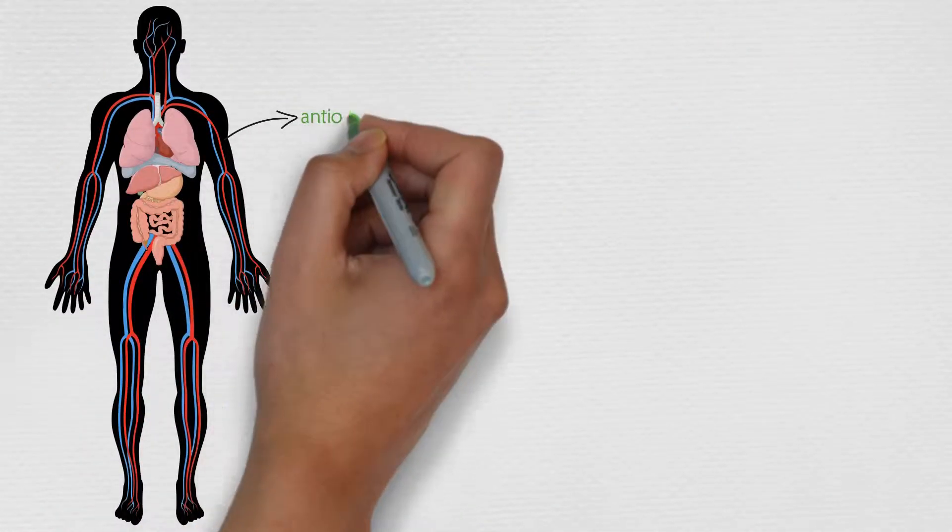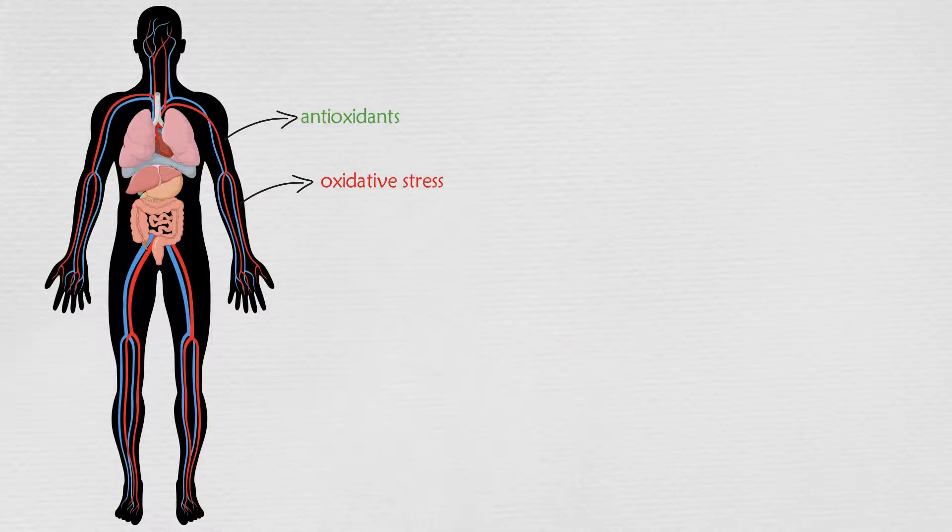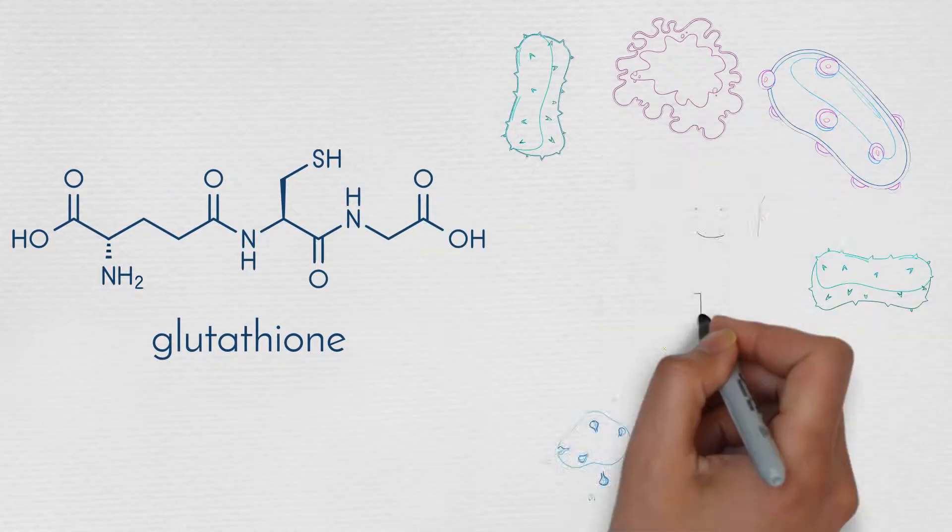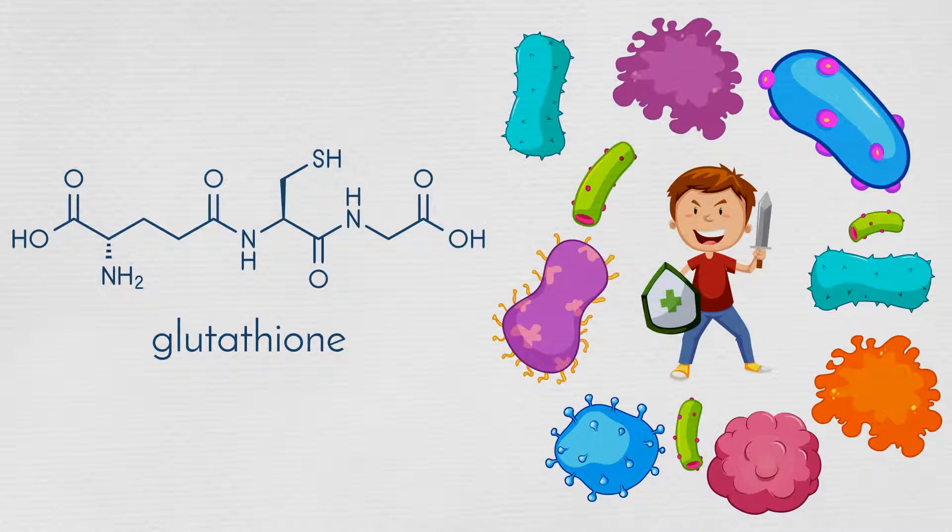The body uses antioxidants to limit the damage done by oxidative stress, and glutathione is the body's most effective self-made antioxidant. Glutathione is a part of the body's natural defense against free radical damage.